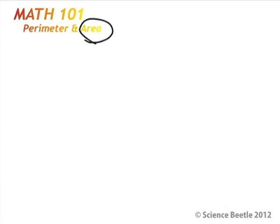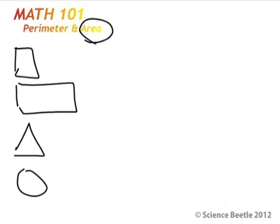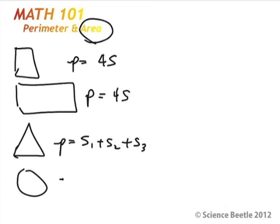Let's go ahead and provide this information. We had a square, a rectangle, a triangle, and a circle. We identified that the perimeter for each of these was going to be essentially 4S, which was side 1 plus side 2 plus side 3 plus side 4, and that was the same thing for a rectangle. The perimeter of a triangle was equal to S1 plus S2 plus S3. And the circumference for a circle was pi times the diameter, or 2π times r.